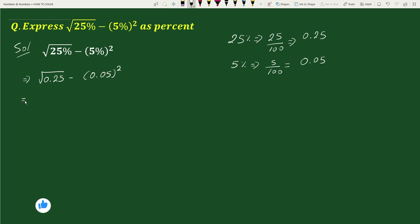This equals to square root of 0.25 will be 0.5 minus square of 0.05 will be 0.0025. This equals to 0.5 minus 0.0025 will be 0.4975.